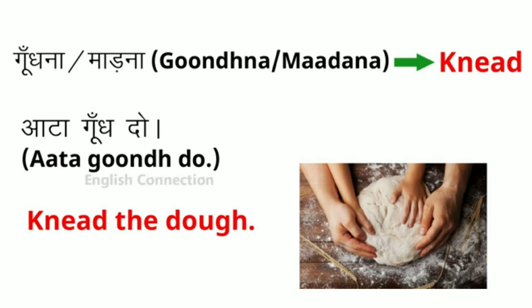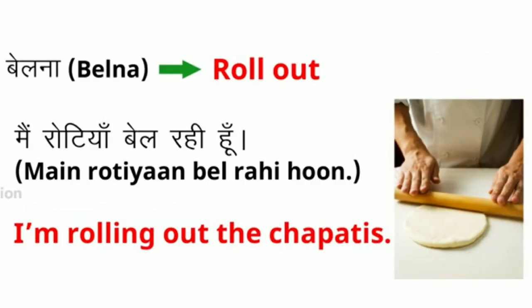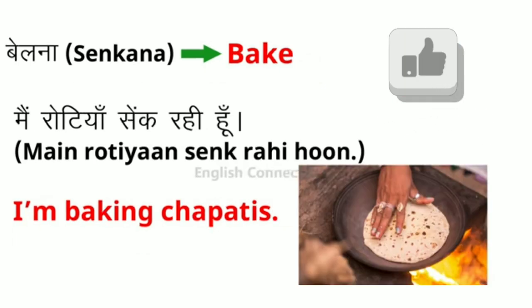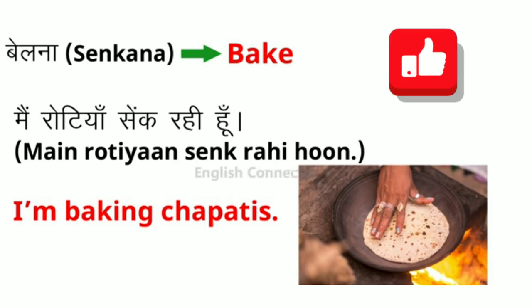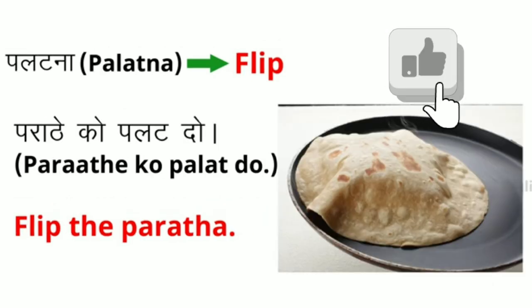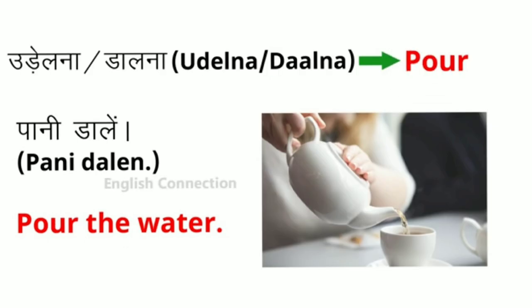The next word is 'knead.' Example: knead the dough. The next word is 'roll out.' Example: I am rolling out the chapattis. The next word is 'bake.' Example: I am baking chapattis. The next word is 'flip.' Example: flip the paratha.